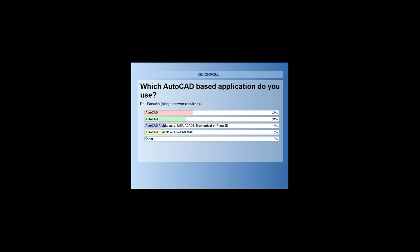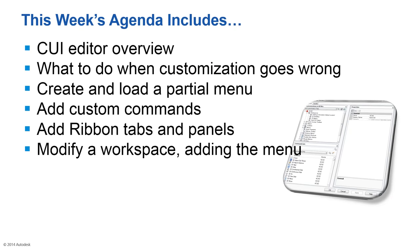We'll talk about what to do when customization goes wrong, because it will — it's never going to be perfect. We're also going to create and load a partial menu. A partial menu is basically your own custom menu that you can take with you and move to other computers, distribute over the network, and customize without affecting the AutoCAD main menu or an enterprise menu. We'll add custom commands to a panel on a ribbon tab, and finally modify a workspace so these tools are available without modifying the default workspace.